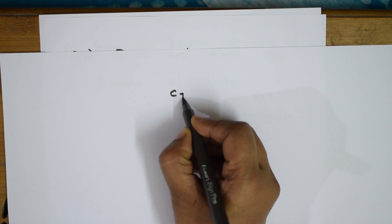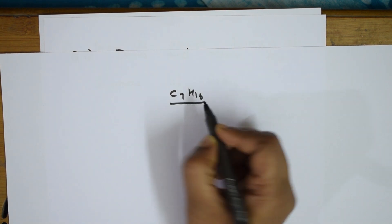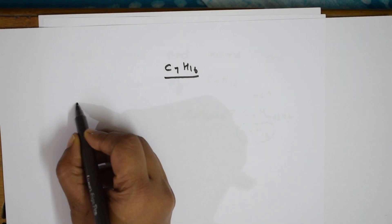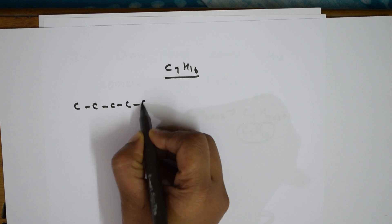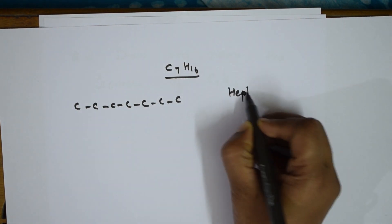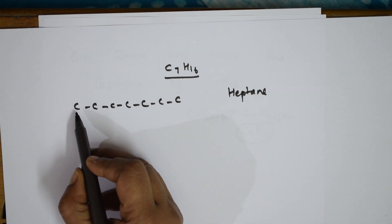I'll take another page for C7H16. They've also asked me to name the structures. First of all, try to write the straight chain, then slowly start branching. First isomer: 1, 2, 3, 4, 5, 6, 7 — this is heptane.